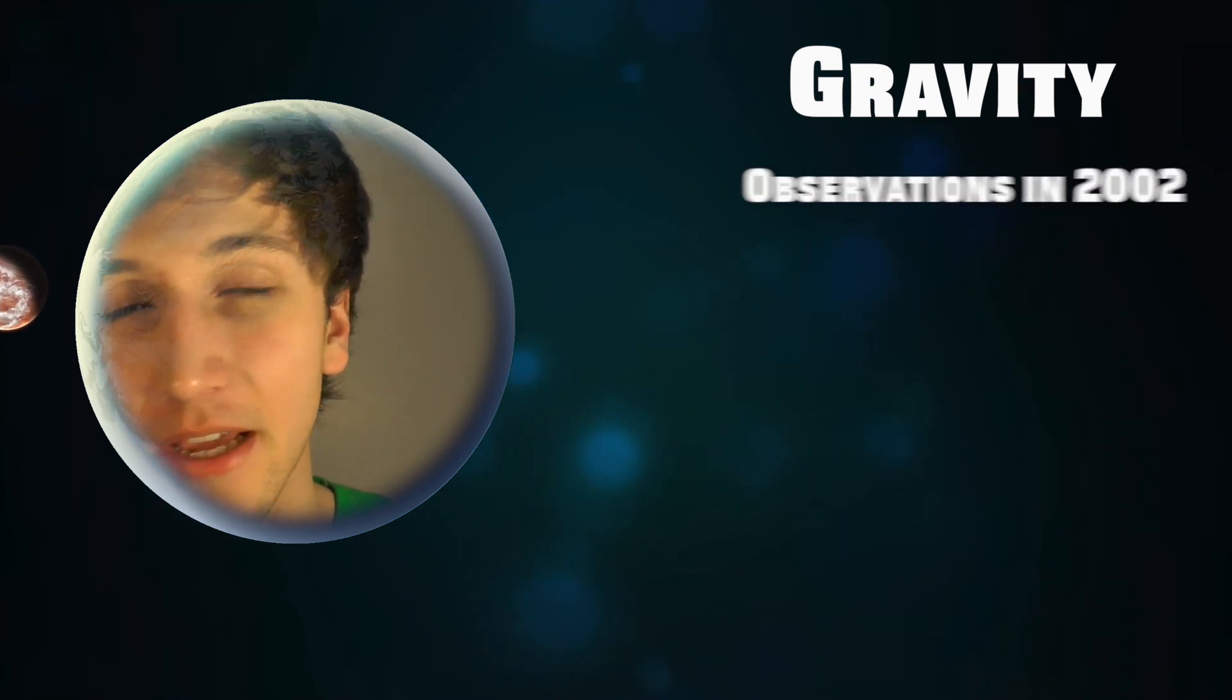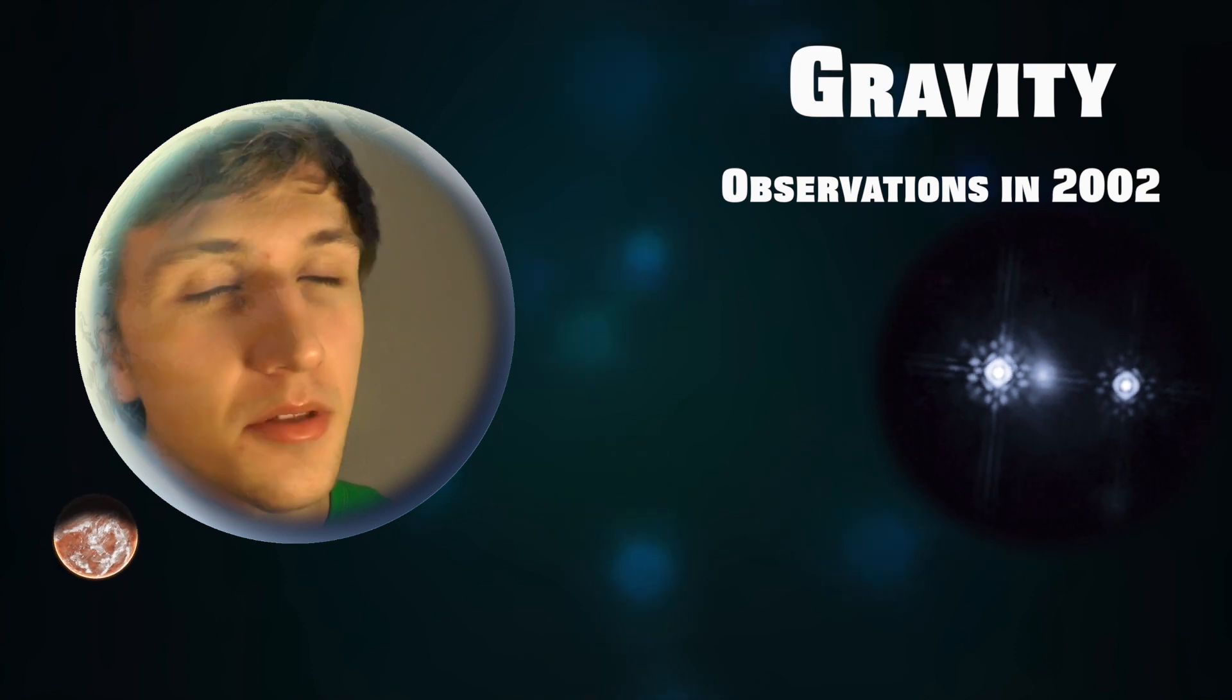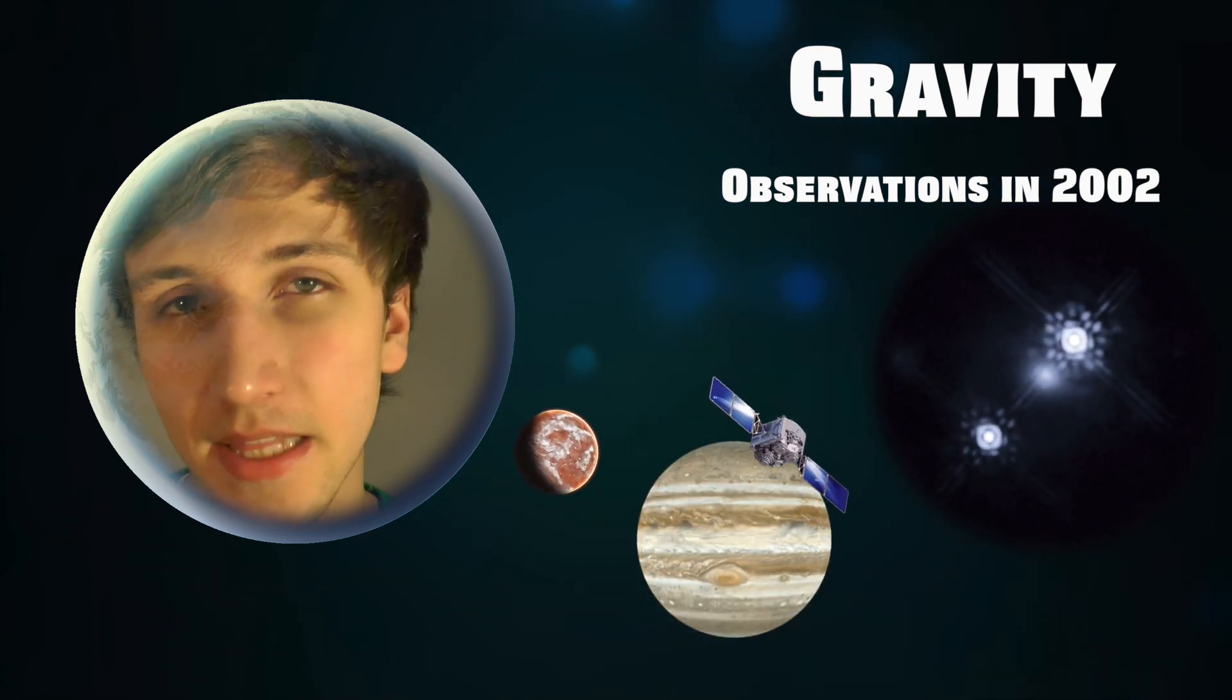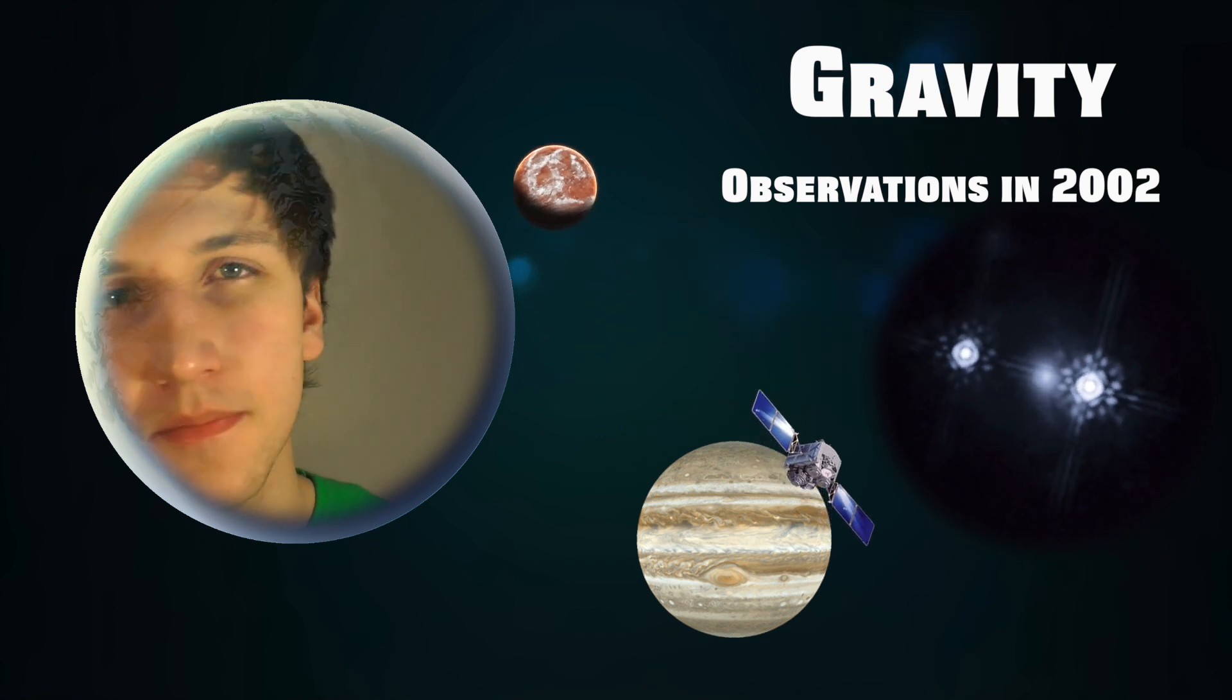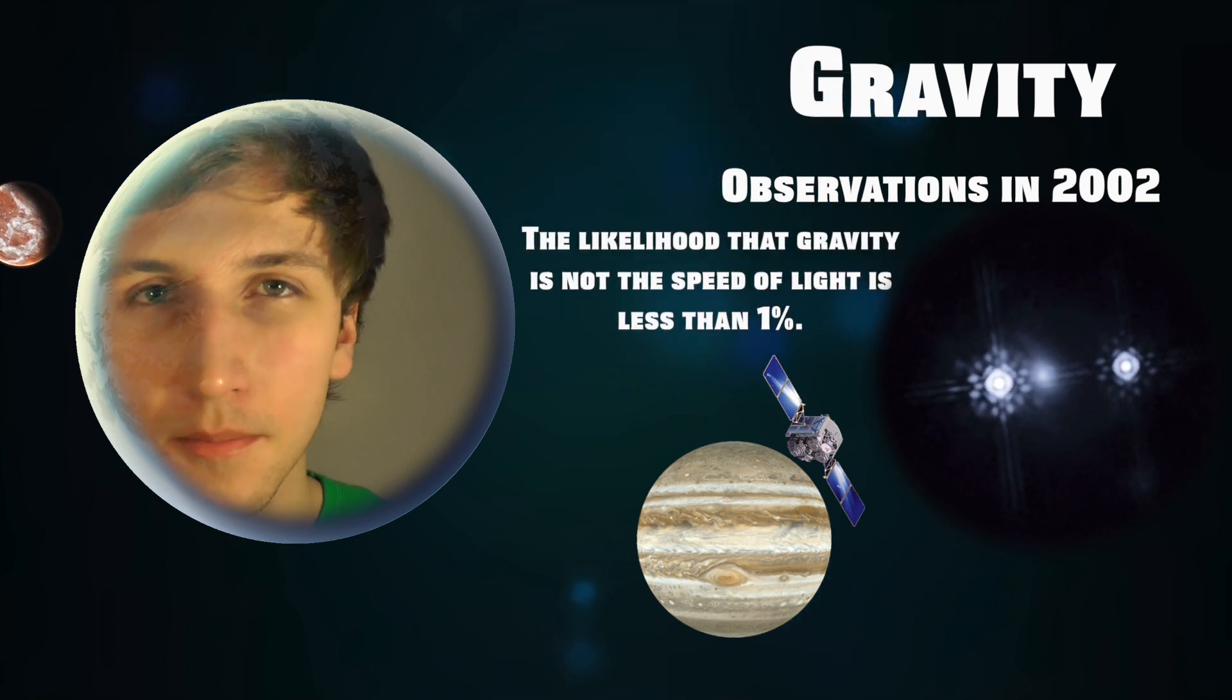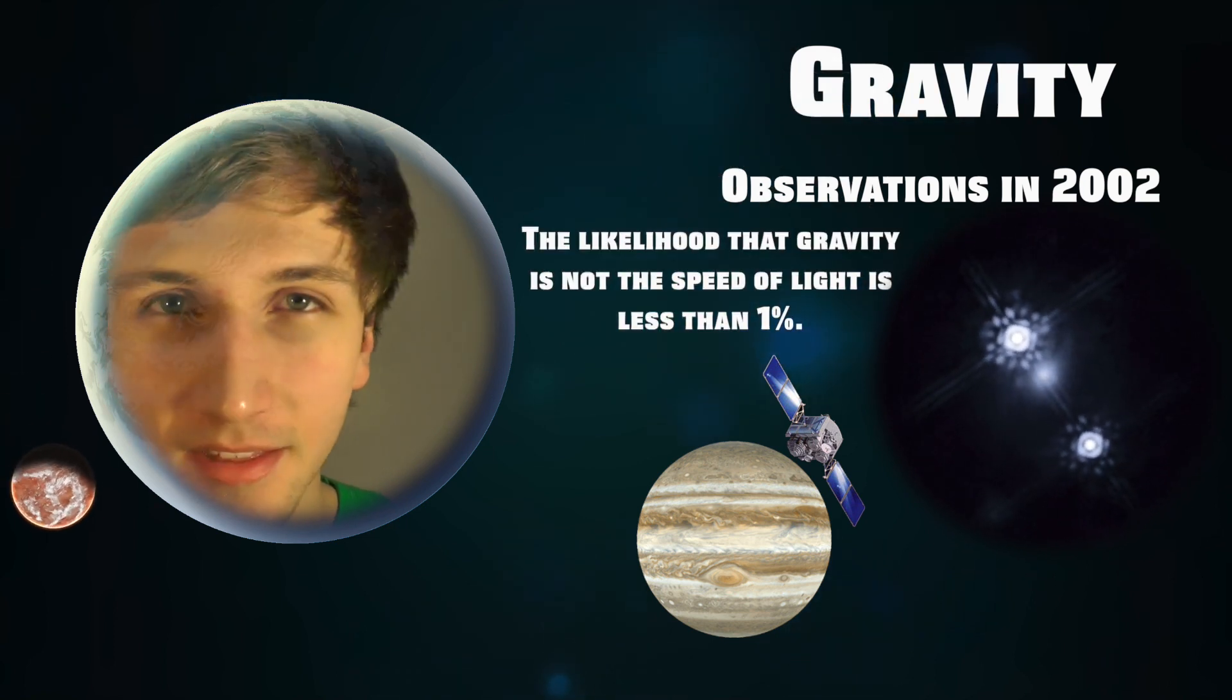We were able to rule out in 2002 that gravity is instantaneous by observing a quasar with a satellite that was orbiting Jupiter. This gave scientists the ability to measure how fast the gravity was being emitted off of the quasar. Because of this, we were able to construct a theory with an error less than one percent that gravity moves at the speed of light.